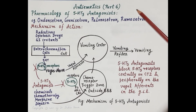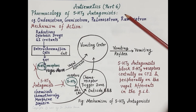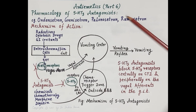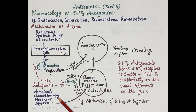Hello students. In today's video on antiemetics part 6, we will study the pharmacology of 5-HT3 antagonists. Examples of 5-HT3 antagonists are ondansetron, granisetron, palonosetron, and ramosetron.